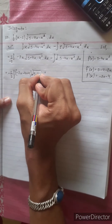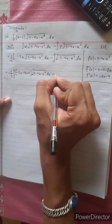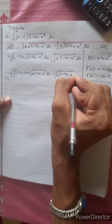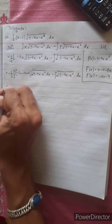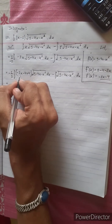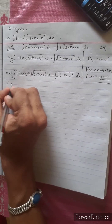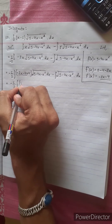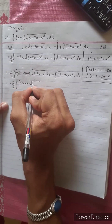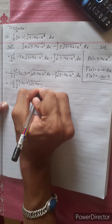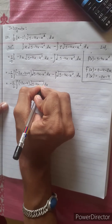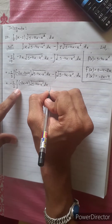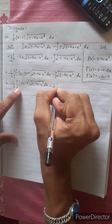We rewrite as: (-4x - f'(x²)) dx, then as (2x - f'(x²)) dx. Now we have -1/2 of the integration, and we add plus 4 integration.